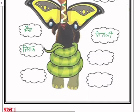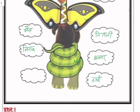आगे देखिए, ये जो green color में लिपटा हुआ दिख रहा है, ये है जगर — जगर के हैं। और जो पैर दिख रहे हैं, ये हैं हाथी के। और जो बीच में धर दिख रहा है, ये है भालू। (Ahead, the one wrapped in green color is a jaguar. The feet visible are of an elephant. And the one in the middle is a bear.)